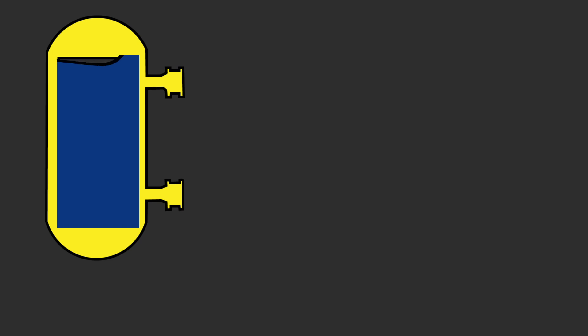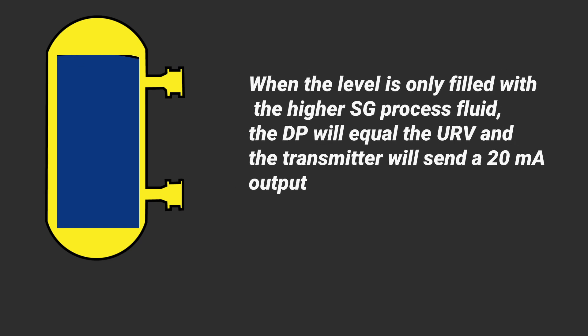Rule number three, when the level is only filled with the higher specific gravity process fluid, the DP or the differential pressure will equal the URV and the transmitter will output a 20 milliamp output.